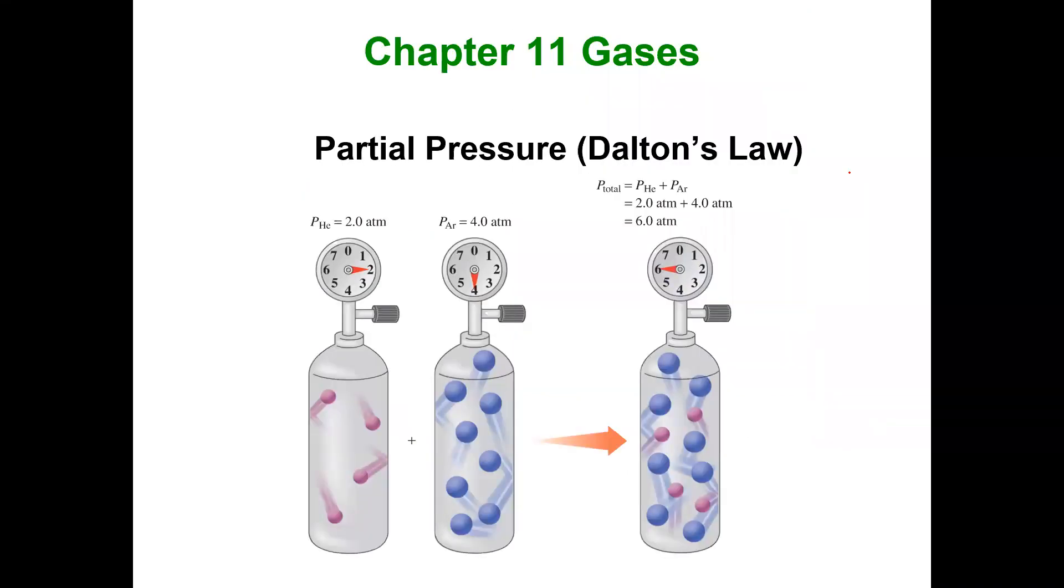With Dalton's law of partial pressures, we see that the total pressure of a gas is the sum of its parts. In this cylinder to the left we have a certain amount of helium at two atmospheres of pressure. Because the majority of volume is empty space, we could combine the same cylinder's particles with the cylinder on the right which is argon gas. The argon gas is exerting a pressure of four atmospheres, but again the majority of space it occupies is empty space.